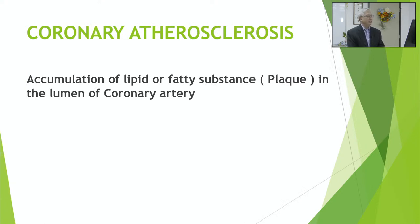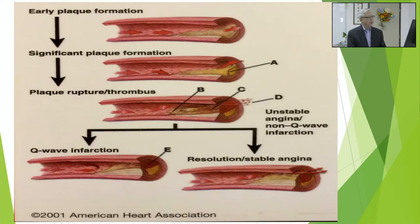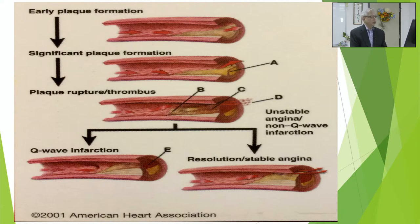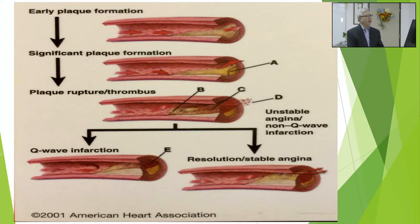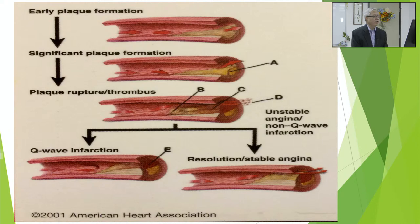The underlying cause is the accumulation of lipid or fatty substances — called plaque — in the lumen of the coronary arteries. A diagram shows the sequence of coronary artery disease: early plaque formation may start at age 20 or 30, then significantly advances in the second panel with the lumen becoming narrower and narrower, until the third panel shows almost complete closure of the blood supply to that artery.